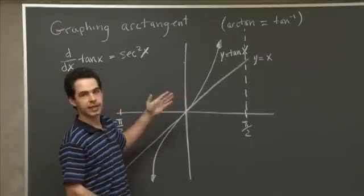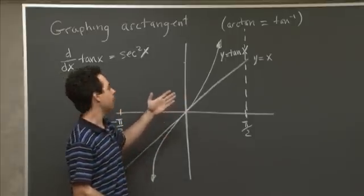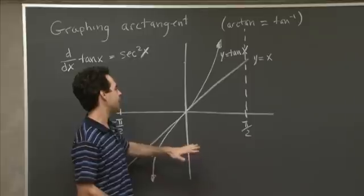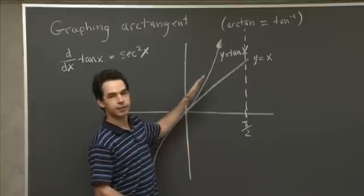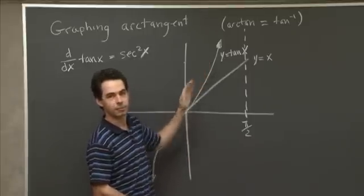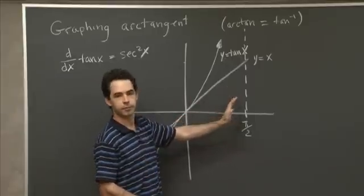So the result of this is that the graph of the arctangent, that is what you get when you reflect this graph across the line y equals x. And because of this property that this graph has, that it lies above the line y equals x for positive x.